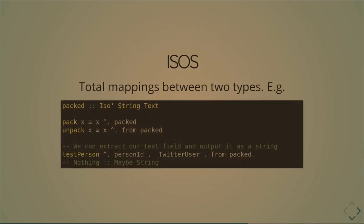Some quick extras — I'll run them pretty quickly but they're important. There's another concept called an ISO, which is a total mapping between two types. For example, an ISO of String to Text says all Strings can be transformed to Text and all Text can be transformed to String. It's a stronger abstraction than prism because you have to be able to go both ways. The interesting thing is we can treat an ISO as both a lens and a prism — it can do both.